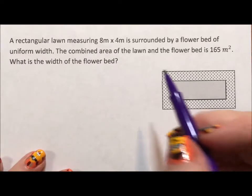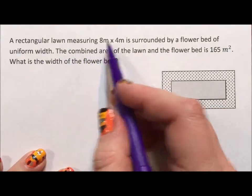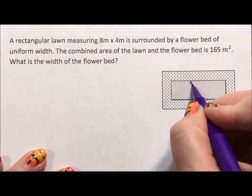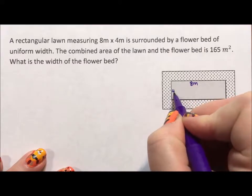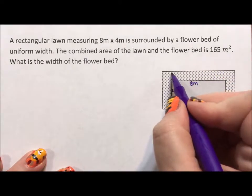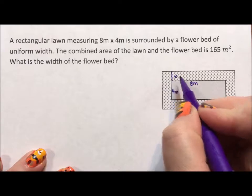Okay, so a rectangular lawn measuring 8 meters by 4 meters. That means this right here is 8 meters and this over here is 4 meters. And we want to know this width.